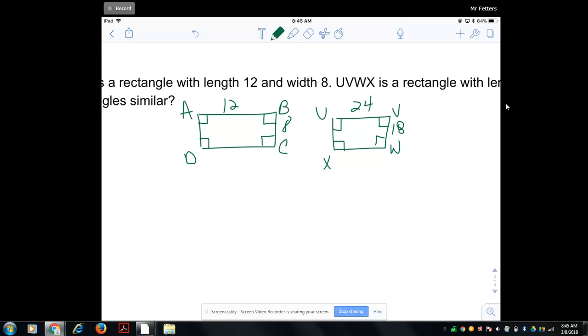In other words, is 12 over 24, because those are my corresponding sides, equal to 8 over 18, my corresponding sides as well. What I need to do is cross multiply to check to make sure that these two are equal. So 24 times 8 is 192, and 12 times 18 is 216.